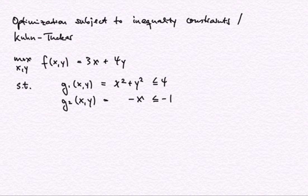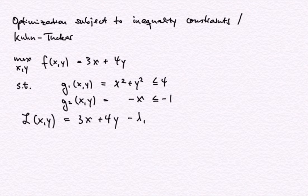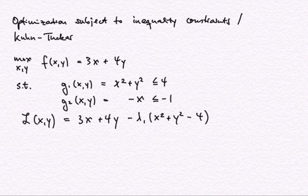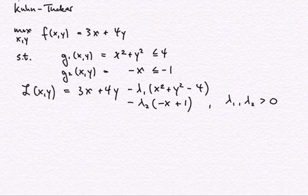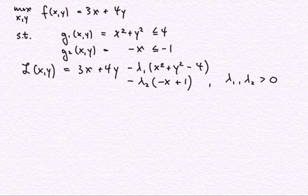We begin by specifying the Lagrange auxiliary function L of x and y, given by the objective function 3x plus 4y, minus the first Lagrange multiplier times the left-hand side minus the right-hand side of the first constraint, and likewise for the second constraint. The Lagrange multipliers must be positive numbers. If we arrive at a negative Lagrange multiplier it does not satisfy the Kuhn-Tucker conditions and we have a contradiction.